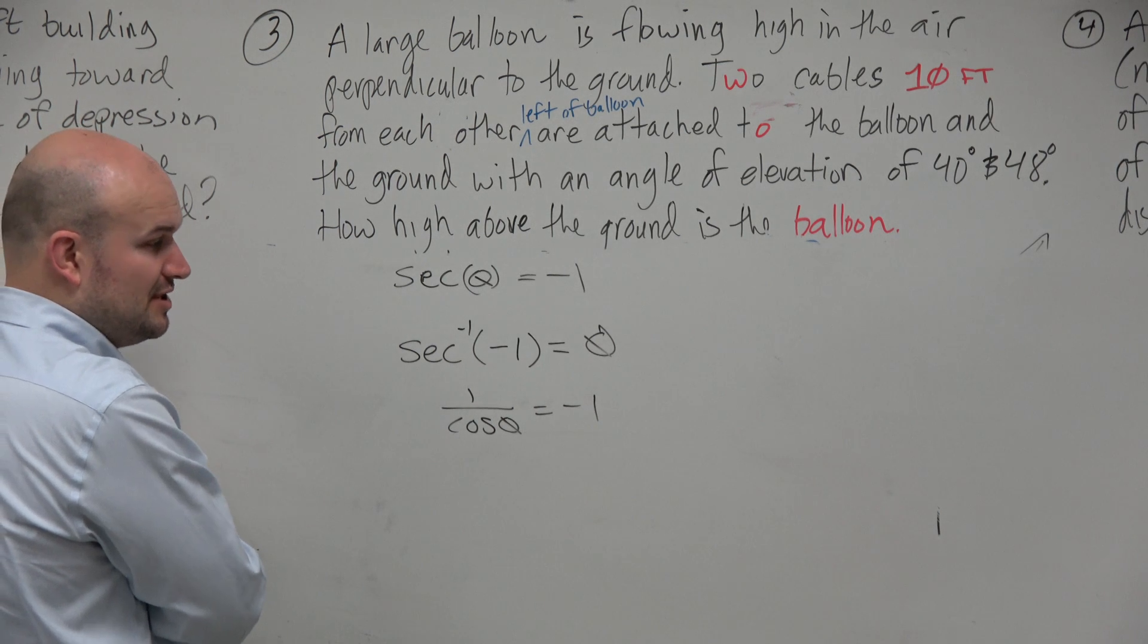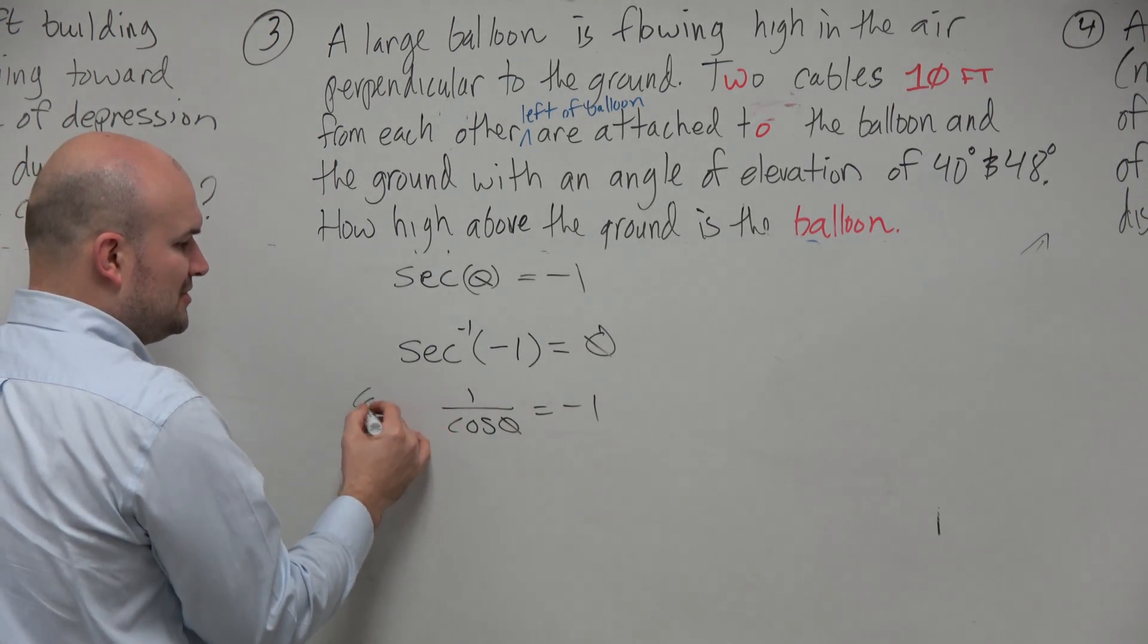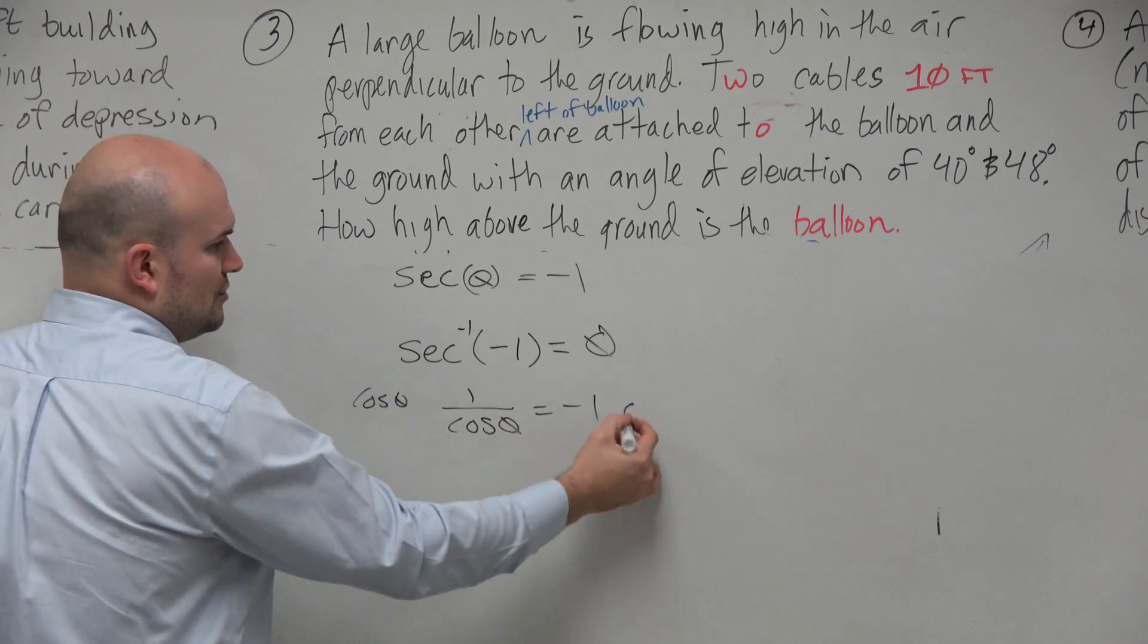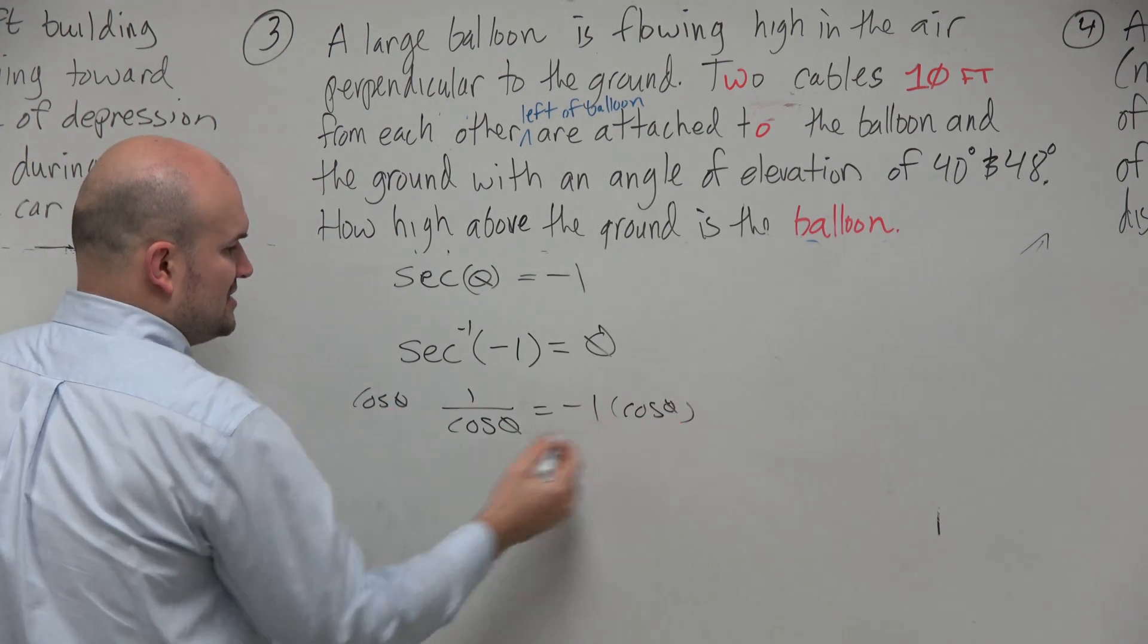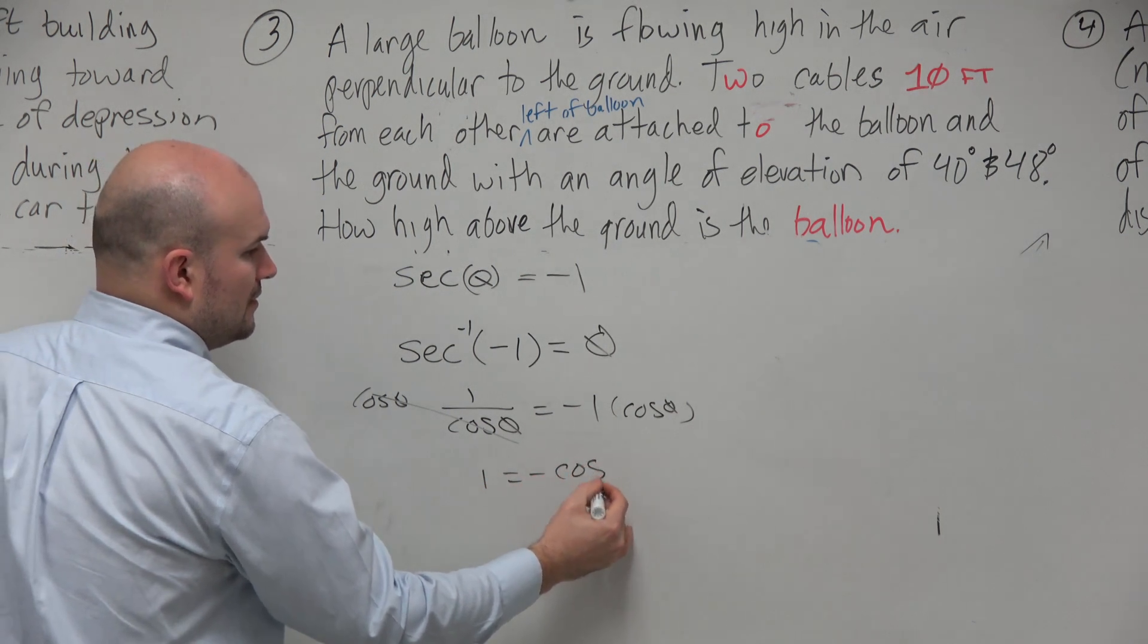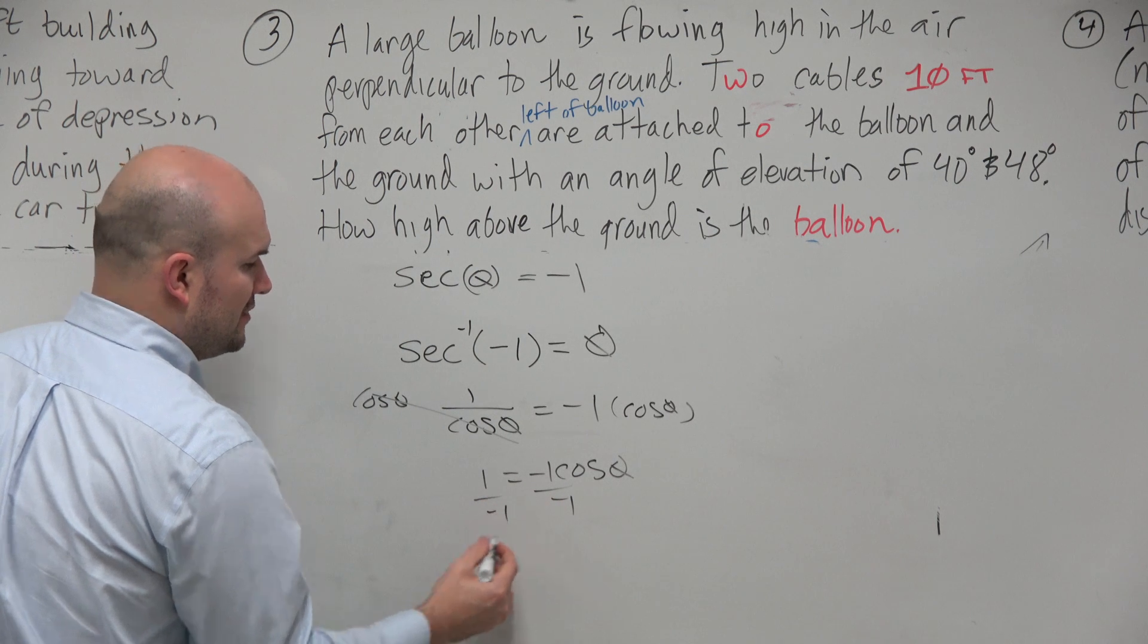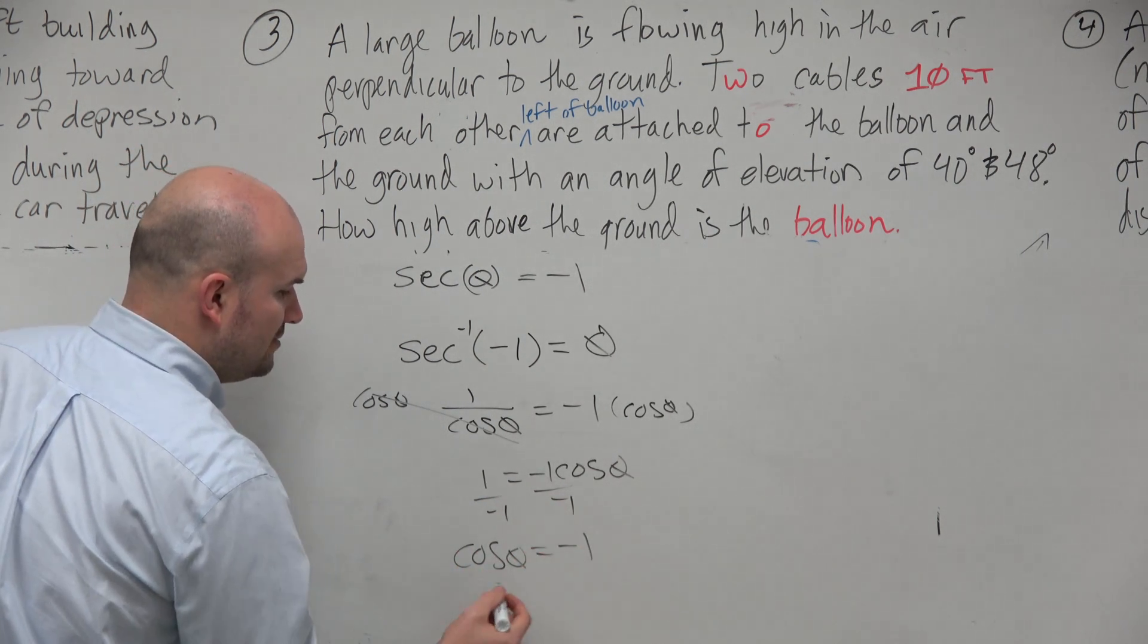Now there's a couple ways you guys could do this. You could multiply cosine on both sides, cosine of theta on both sides. And therefore, you'd get 1 equals negative cosine of theta. Divide by negative 1, divide by negative 1. Cosine of theta equals negative 1.